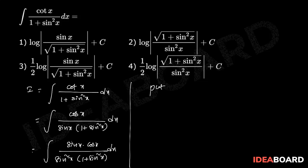Here substitution is put sin square x equal to t. Differentiate on both sides we get 2 sin x into cos x dx equal to dt. Therefore I equal to 1 by 2 into dt by t into 1 plus t.